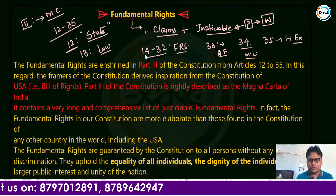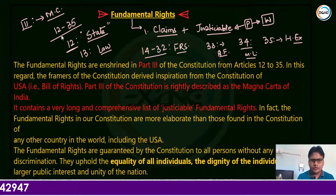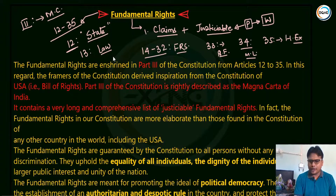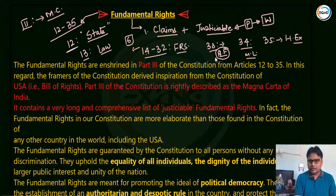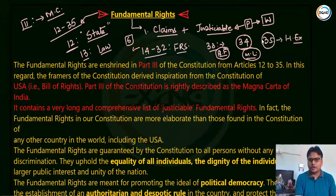Overall, a key fact to remember: Part Three is called the Magna Carta. Articles 12 to 35 are the articles related to fundamental rights. Article 12 defines 'state' for fundamental rights purposes. Article 13 defines 'law' for Part Three. Articles 14 to 32 cover the six fundamental rights. Article 33 covers limitations for armed personnel. Article 34 covers limitations during martial law. Article 35 covers the nature of execution of these rights — whether they are self-executory or require legislation.